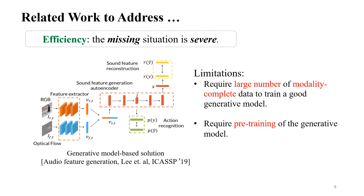A straightforward solution to tackle efficiency is to leverage generative model-based methods. The basic idea is to use modality complete training samples to train a cross-modality transfer model that can conduct cross-modality generation — for example, transferring an RGB image to the corresponding audio modality. Once we have the transfer model, we can use it to impute modality incomplete samples to be modality complete. But there are limitations: it requires a large number of modality complete samples to train a good generative model, and it involves pre-training of the generative model.